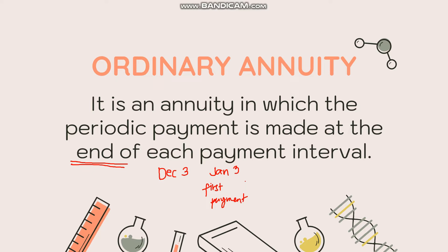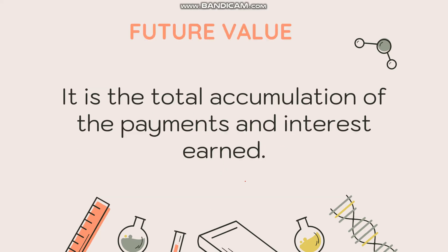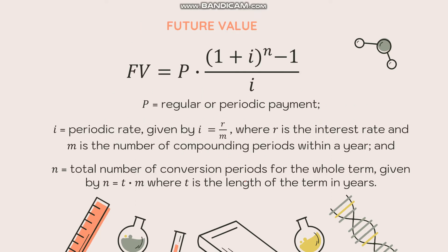We also have what we call future value — the total accumulation of payments and interest earned. For example, if you want to identify how much you have to pay in total including interest and periodic payments, you solve for future value. The formula is: FV = P × [(1 + i)^n − 1] / i, where P is the regular or periodic payment.